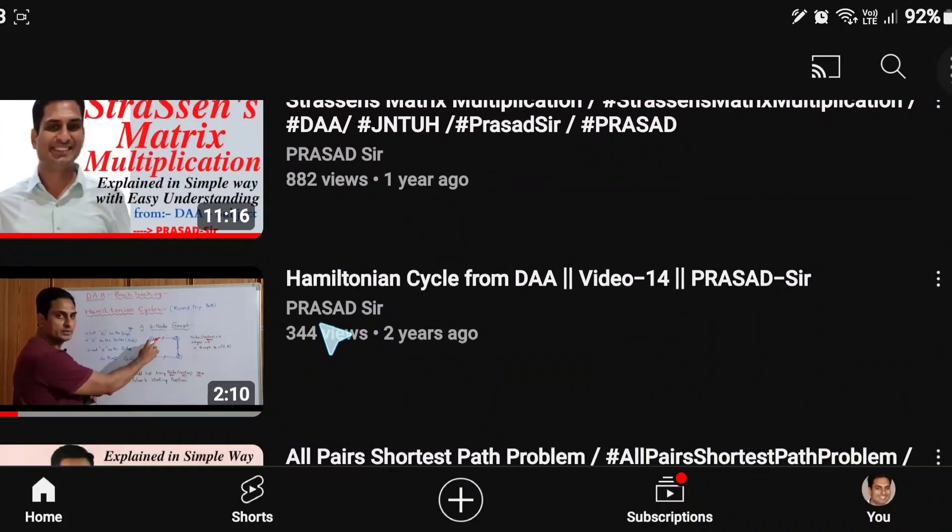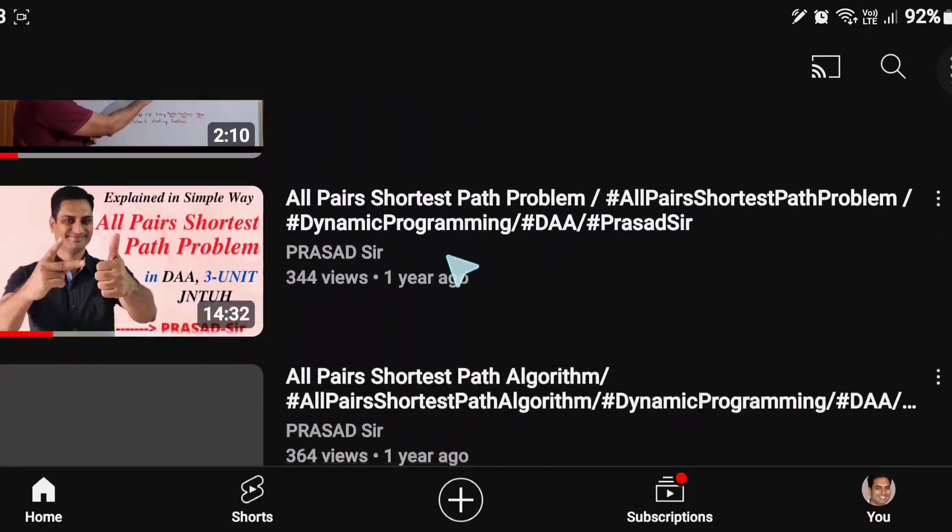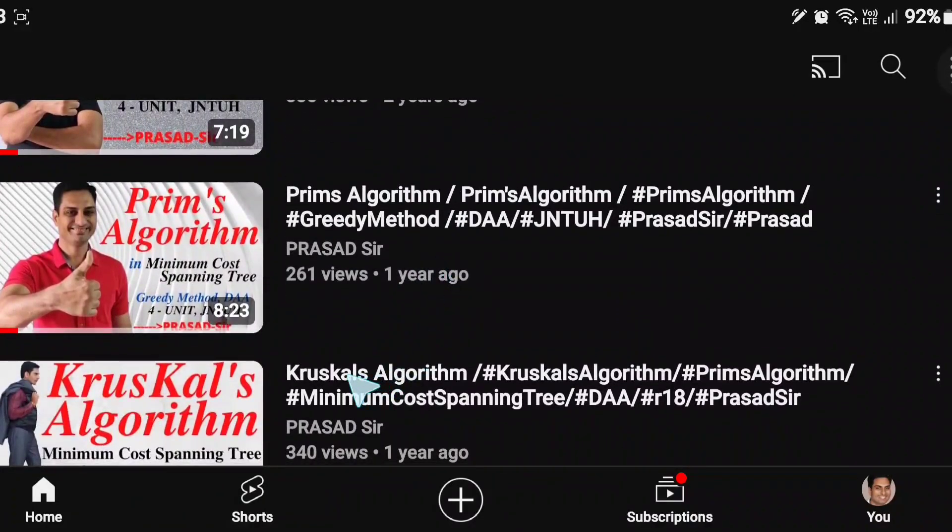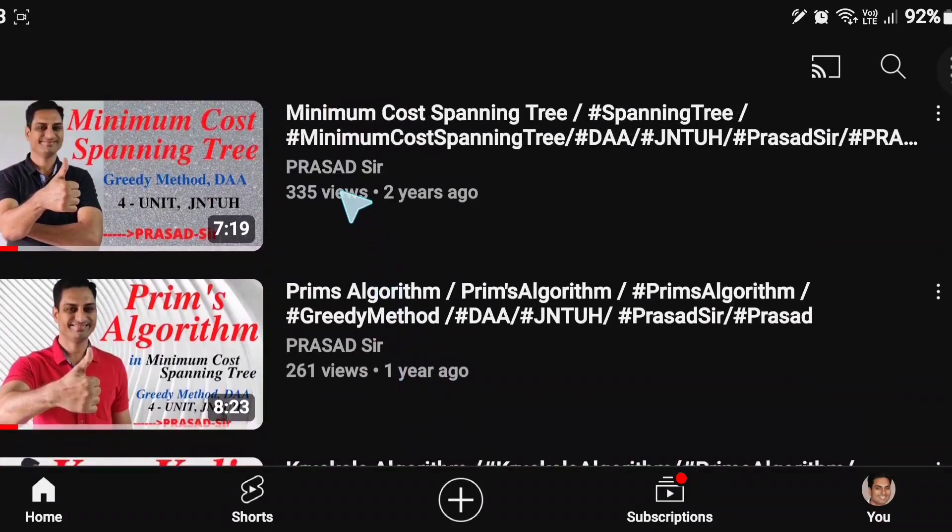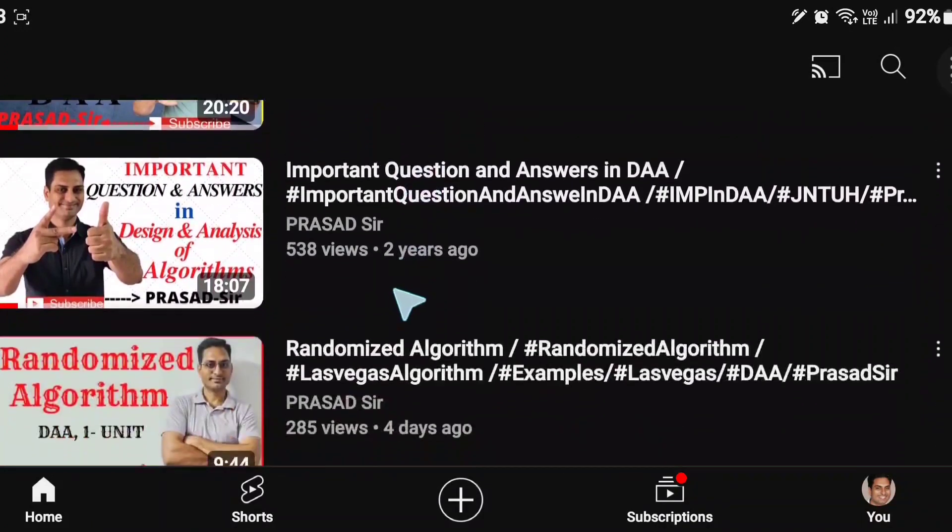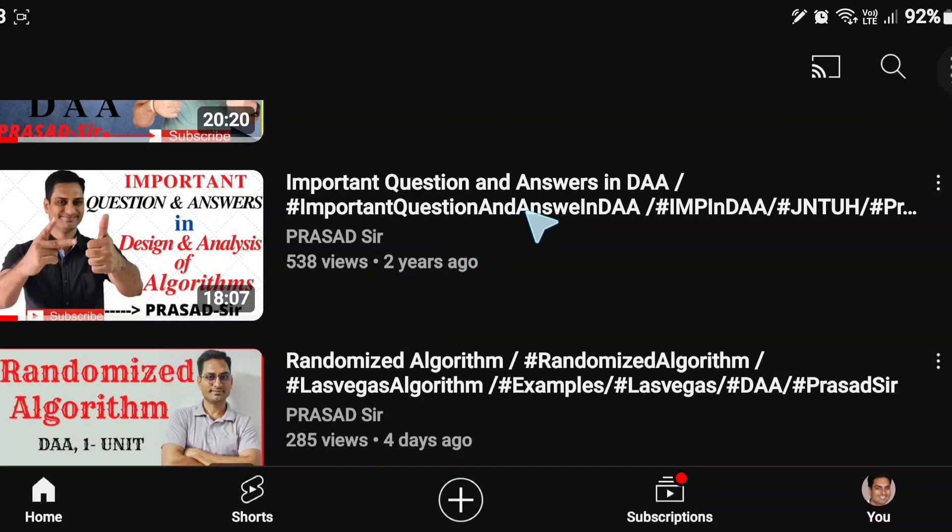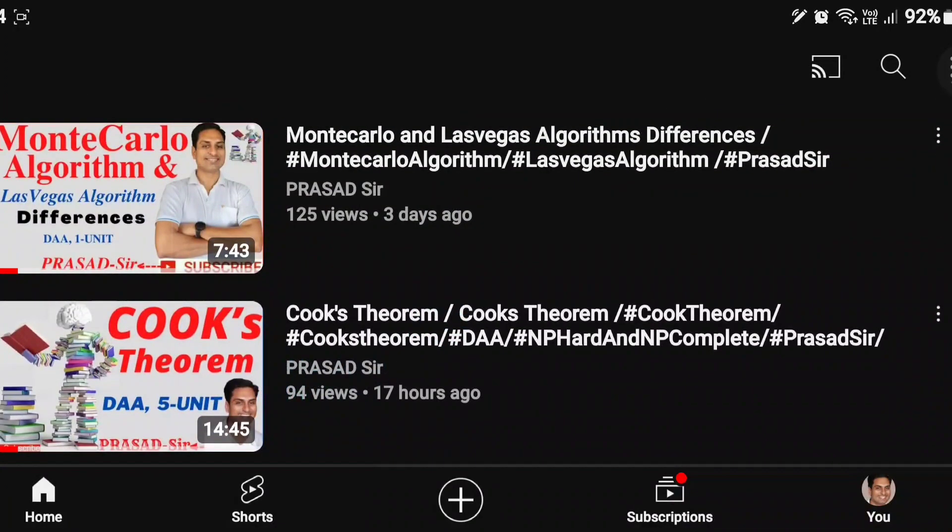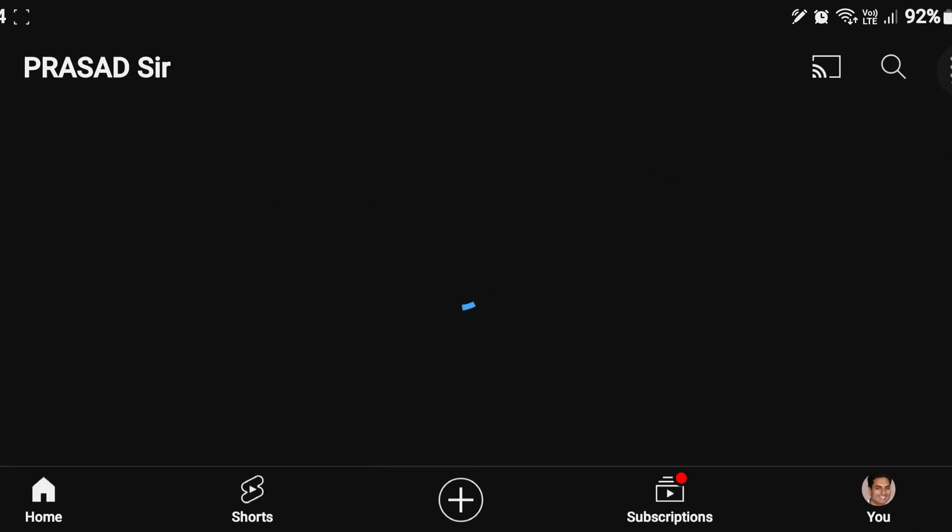The unit wise all scientist named algorithms are there here. Towers of Hanoi, Strassen's matrix multiplication, Hamiltonian cycle, all pairs shortest path, minimum cost spanning tree, Prims, Kruskal. For these two this is theory. And single source, this is a problem. And Dijkstra's algorithm for that. And important questions, unit wise important questions are there. Randomized algorithm, for that we have Las Vegas and Monte Carlo algorithm. Last Cook's theorem. So I made it into playlist so that you can prepare very well.